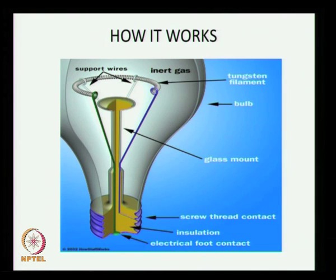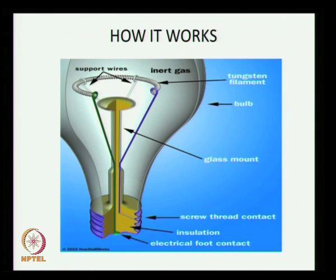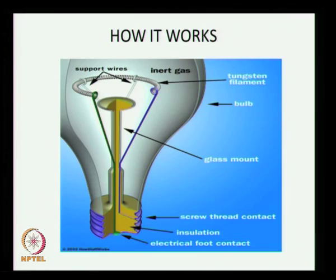With the help of the tungsten filament, electricity produces light. Because of these important parts working together, the electrical bulb is useful to us.